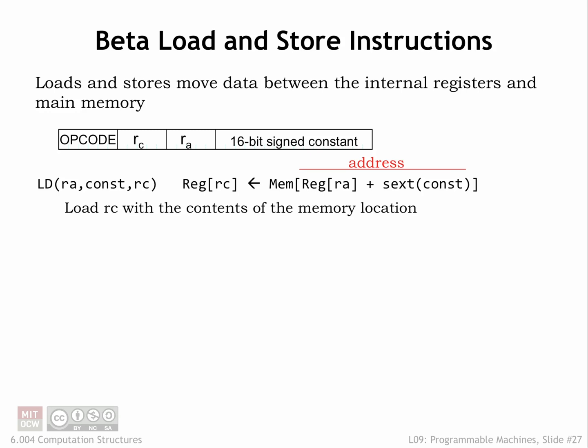Now let's turn our attention to the second class of instructions, load and store, which allow the CPU to access values in memory. Note that since the Beta is a load-store architecture, these instructions are the only mechanism for accessing memory values.